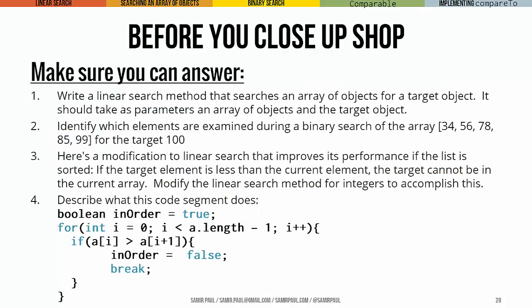Okay, before you close up shop, big ideas. Write me a linear search method that searches an array of objects for some target. We wanted to be able to take two parameters, an array of objects, not particular ints, not students or whatever, but a general object and whatever the target object we're looking for is. This is not a coding exercise, but this is one for just helping you think through the binary search.